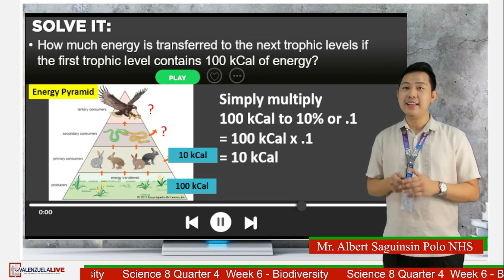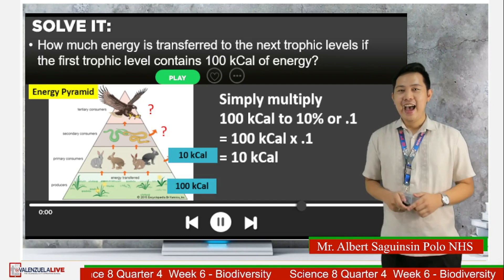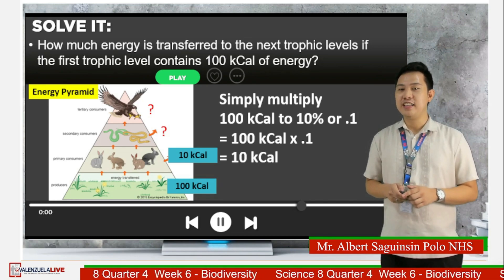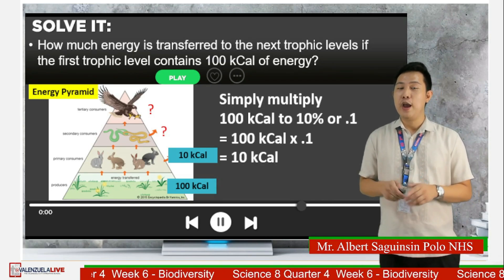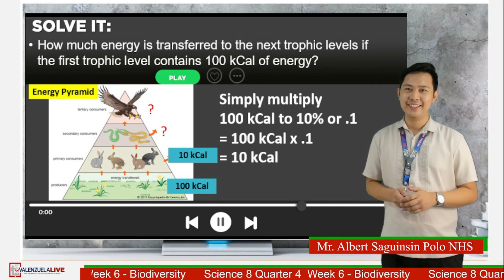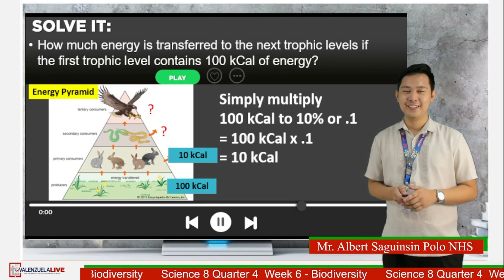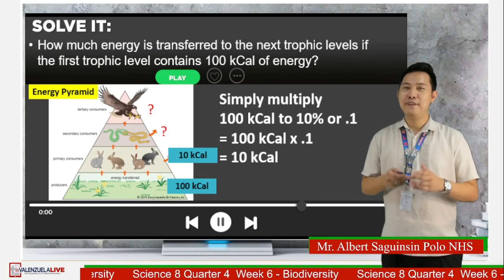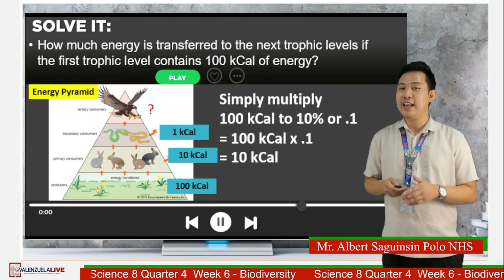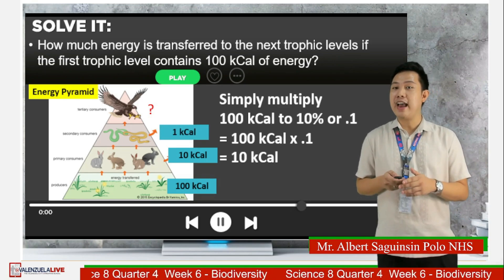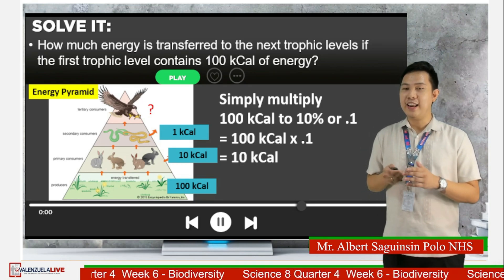What about the secondary consumers? Now it's your turn. How much energy will they get from the primary consumers? Comment your answers. Very good! The answer is 1 kilocalorie, because 10 kilocalories multiplied by 0.1 is 1 kilocalorie.